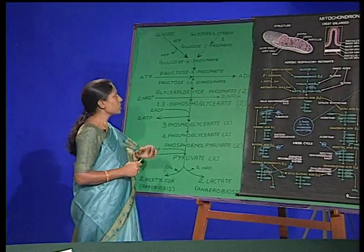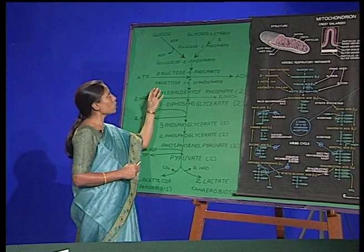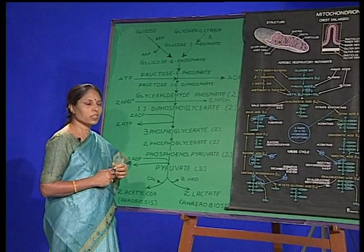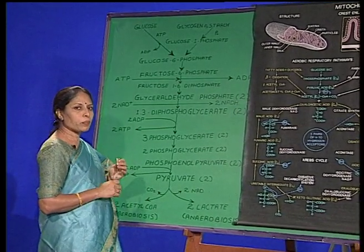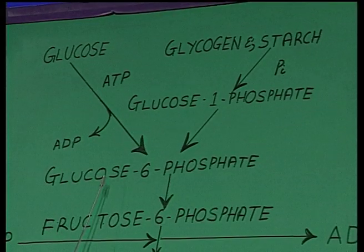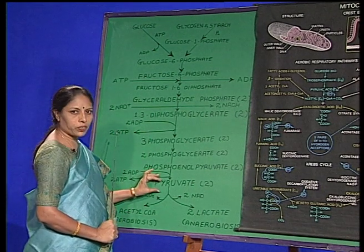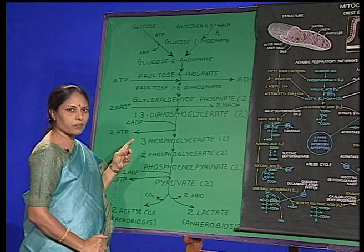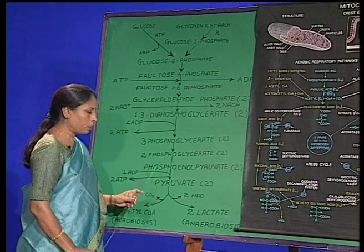Glycolysis is the first step in the degradation of fuel molecules. It is an anaerobic degradation process — it does not require any oxygen. It takes place in the cytoplasm. From each molecule of glucose, a series of reactions takes place, and ultimately it releases two molecules of pyruvate, two molecules of ATP, and hydrogen molecules. The end product of glycolysis is pyruvate.